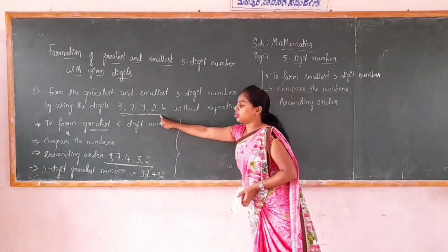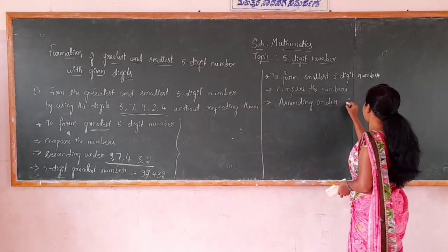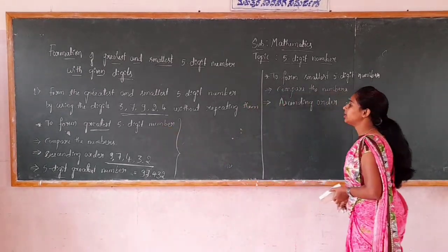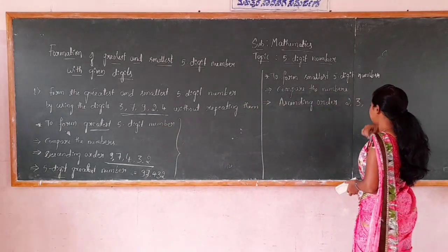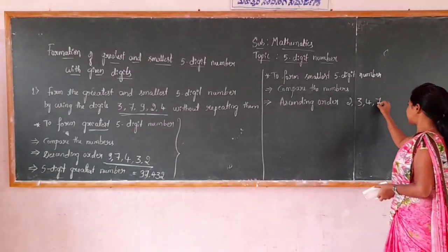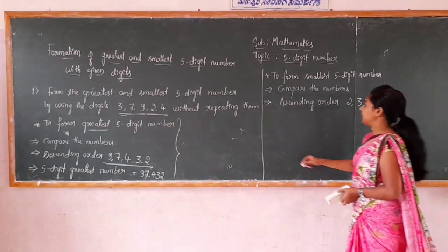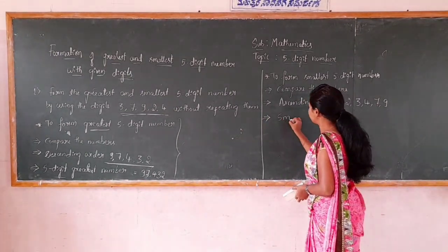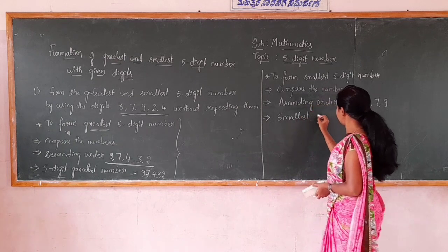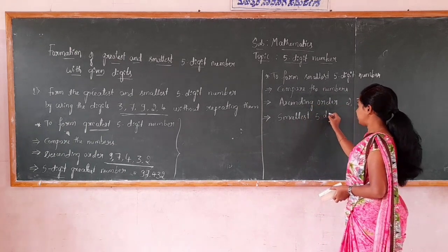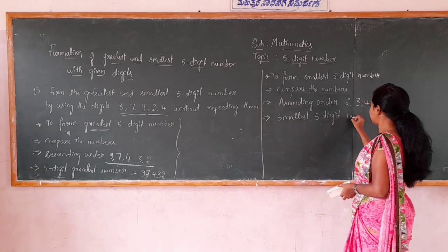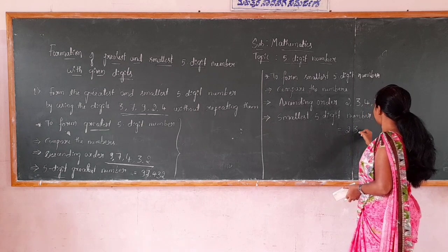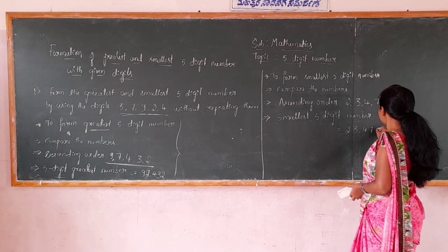In the given digits, 2 is the smallest, so 2 comes first. The next smallest is 3, then 4, then 7, then 9. After arranging in ascending order, we get the smallest 5-digit number, that is 23,479.